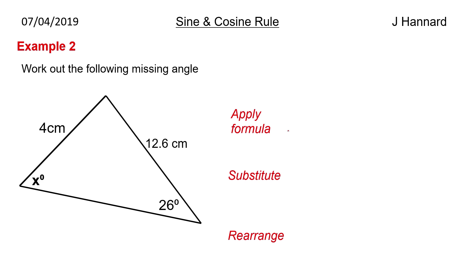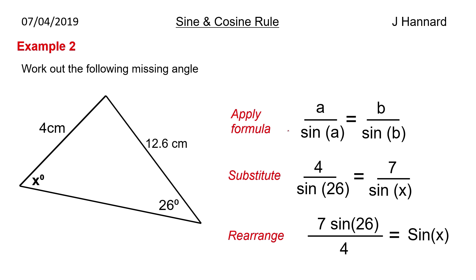Second example then, work out the following missing angle. So this time we've got an angle that's missing and we're given two lengths and another angle. So we've got our formula a over sine a equals b over sine b. Substitute in, we've got 4 over sine 26 equals 7 over sine x. Rearrange so we get sine x equals 7 sine 26 over 4 and then we'd work that out and do the shift sine function on our calculator.